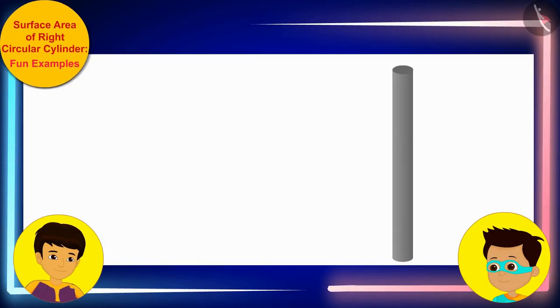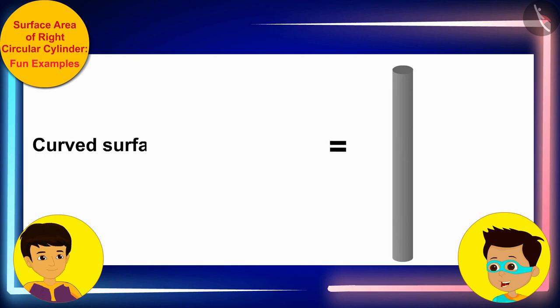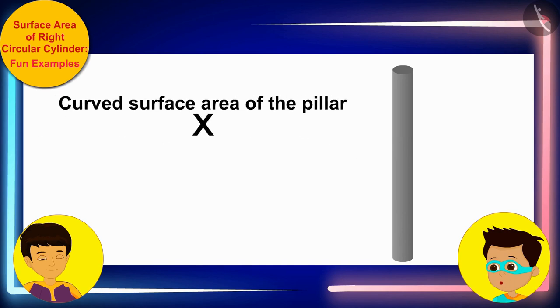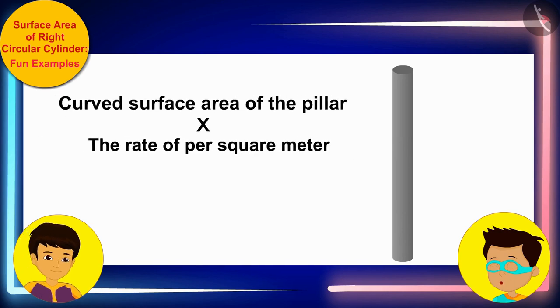Manas, to help uncle, we have to first find the curved surface area of this pillar. Then, we can multiply it by the rate per square meter and find the total cost of coloring the pillar.